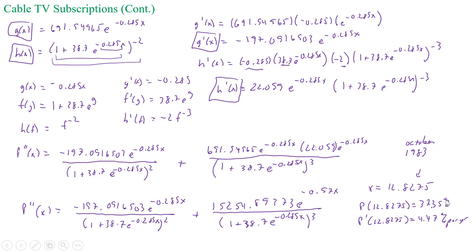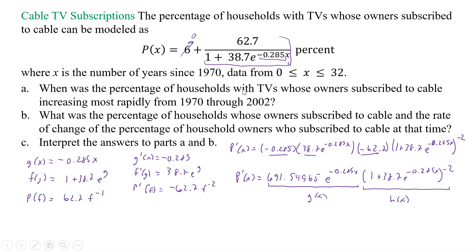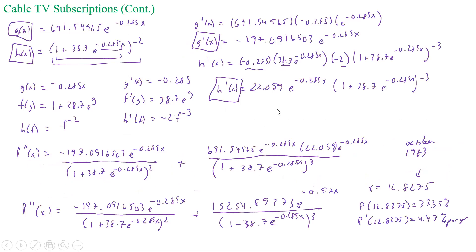So to interpret the answers: between 1970 and 2002, the percentage of households with TVs whose owners subscribed to cable TV was increasing most rapidly in October 1983 by 4.47% per year, and at that time 37.35% of households actually subscribed. A lot of it starts off with just rewriting the problem and adding in when it was, what the percent was, and what the rate of change was. So let's stop there and I'll come back for one more. Thank you.